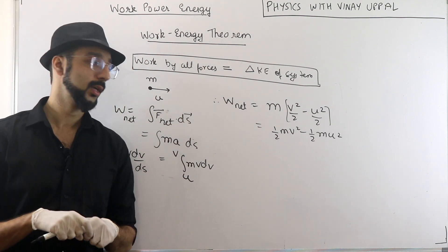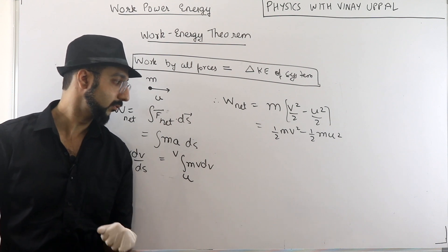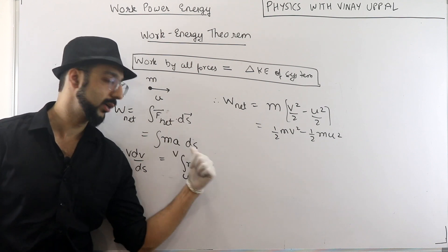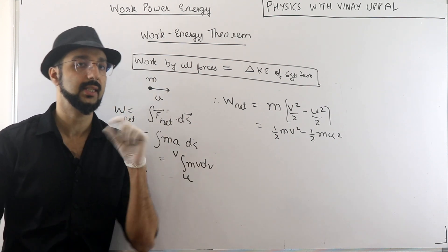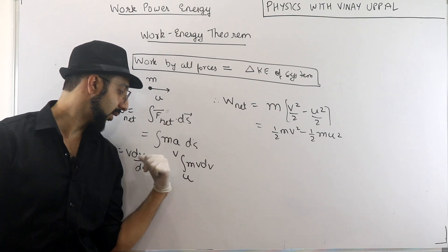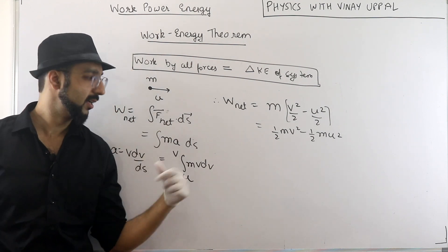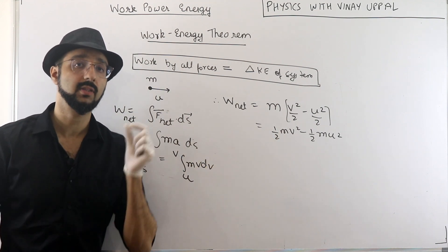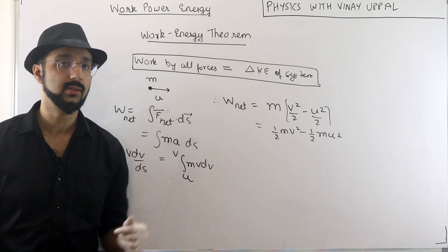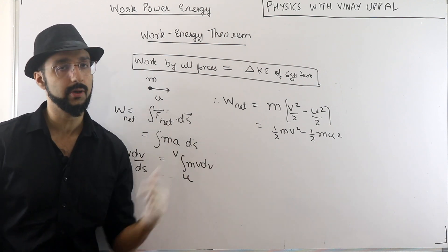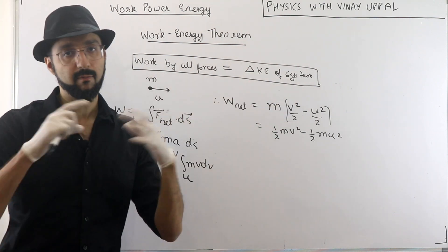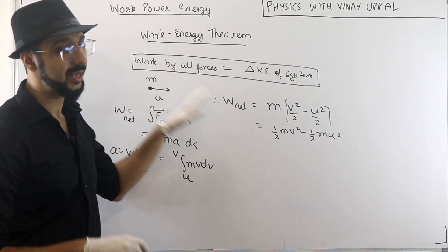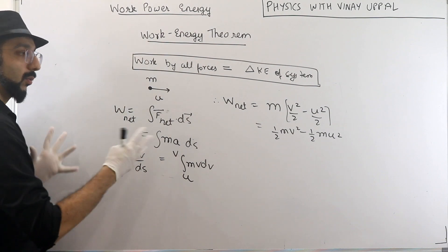The total work done on a particle equals the change in kinetic energy. For one dimension it's proven. In three dimensions, you'd write F dot ds as ax dx + ay dy + az dz, then write ax as vx dvx/dx and so on — same process, same answer, using the fact that vx² + vy² + vz² = v². This theorem is valid for any number of particles, as long as you take work done by all forces.